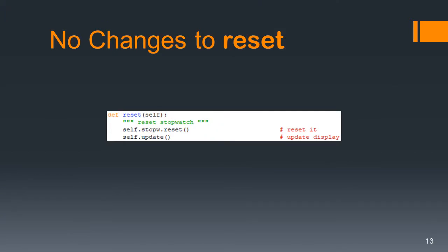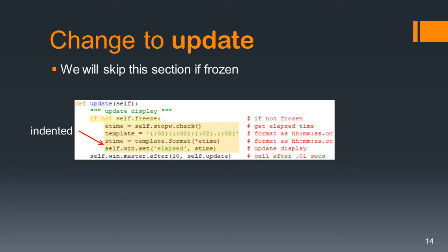There are no changes required for the reset method. We're going to have to change the update method. If the display is frozen, then we want to basically skip most of the method. So we say if not self.freeze - which means we're not frozen - then all the stuff we want to do. Those four lines will have to be indented because it's under an if statement. In either case, we still want to run self.when.master.after to set up update to be called a hundredth of a second later.